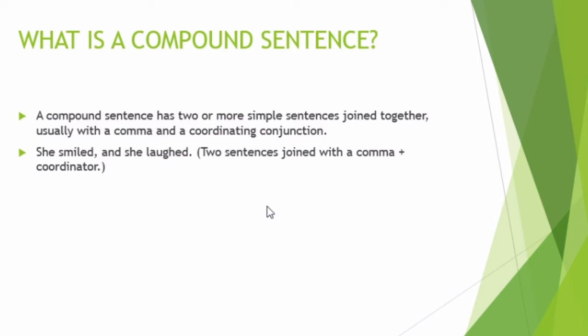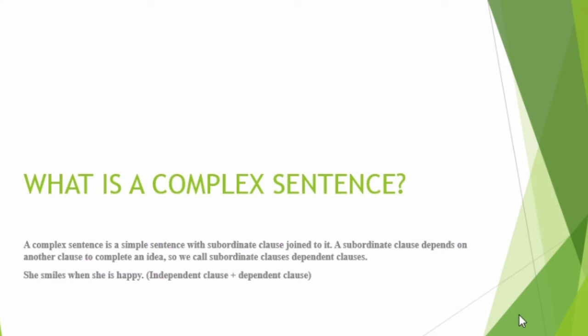There are different kinds of conjunctions which we study in parts of speech. For a compound sentence example: 'She smiled, and she laughed.' Looking at the previous slide, 'she smiled' was a simple sentence on its own. But here, two simple sentences are joined with a comma plus 'and' — making it compound. A complex sentence is a simple sentence with a subordinate clause joined to it.